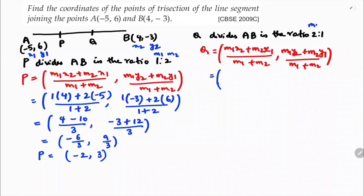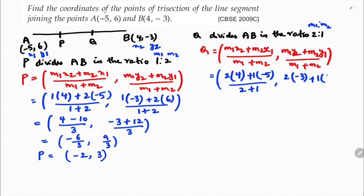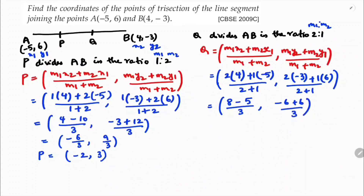For Q, M1:M2 = 2:1, and x1 = -5, y1 = 6, x2 = 4, y2 = -3. So x = (2×4 + 1×(-5)) / (2+1) = (8 - 5) / 3 = 3/3 = 1. And y = (2×(-3) + 1×6) / 3 = (-6 + 6) / 3 = 0/3 = 0. So Q is (1, 0). Therefore, the coordinates of the points of trisection of line segment AB are P(-2, 3) and Q(1, 0).